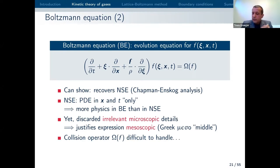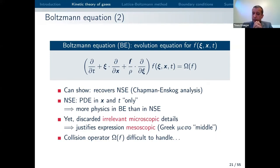Viscosity itself doesn't exist on the micro scale — you only have collisions between molecules on the micro scale — but on the macro scale these collisions are visible through the viscosity. It is important to note that the Boltzmann equation has more physics than the Navier-Stokes equation, simply because we have more information included. Still, the Boltzmann equation doesn't give you all the molecular information, and that's why it's justified to call it a mesoscale or mesoscopic approach — 'meso' comes from Greek and means 'middle'.